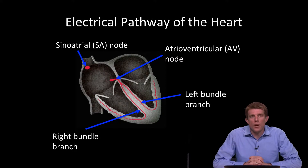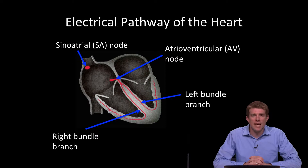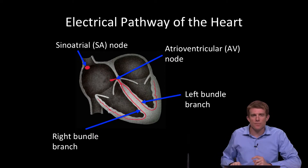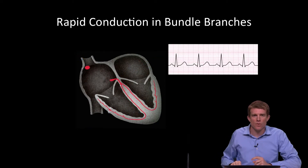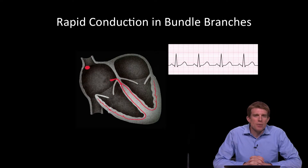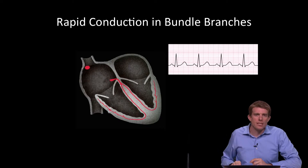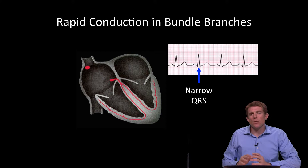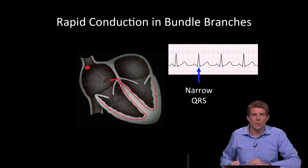Getting started with a quick review of the electrical pathway of the heart. We know the electricity goes from the sinoatrial node to the AV node and then down our right and left bundles. The rapid conduction occurs in these bundle branches, and that's how we get our narrow QRS complex, because it's following the normal electrical pathway.